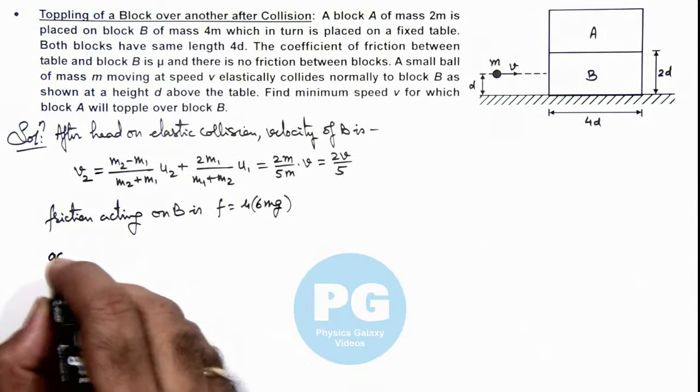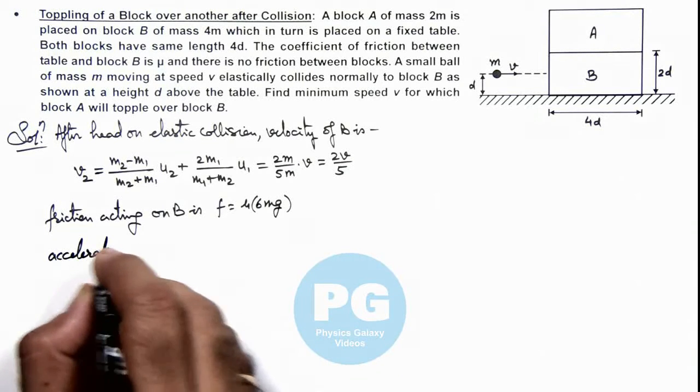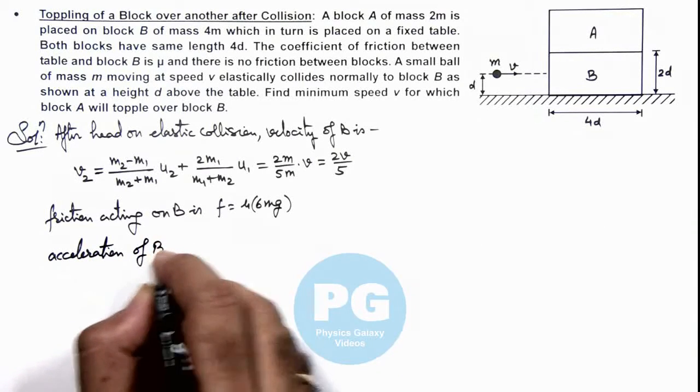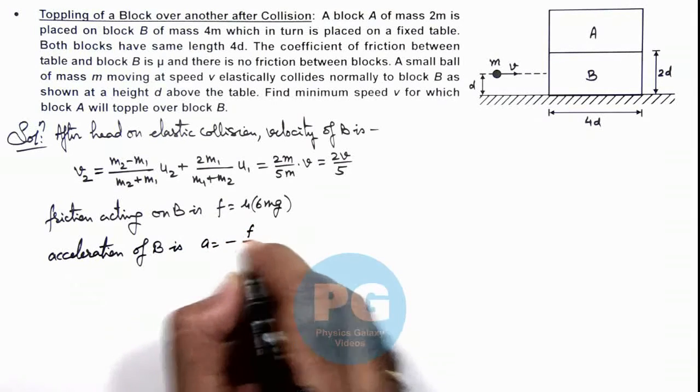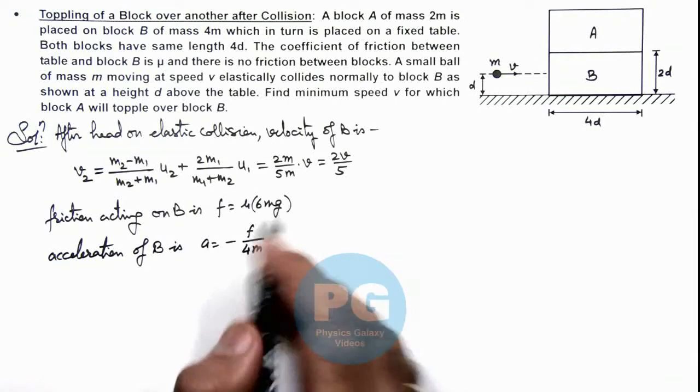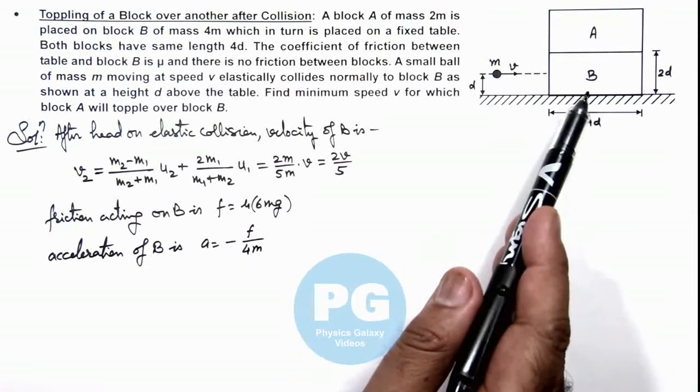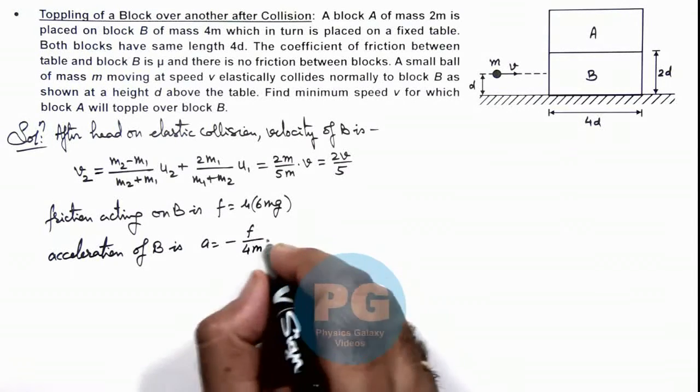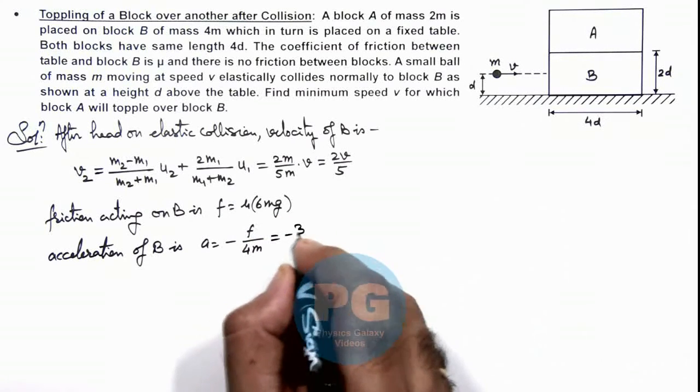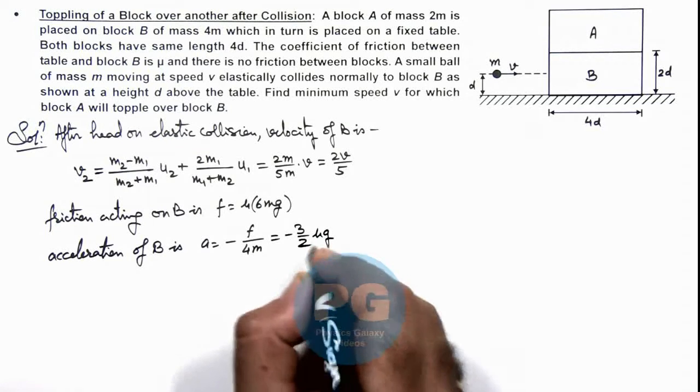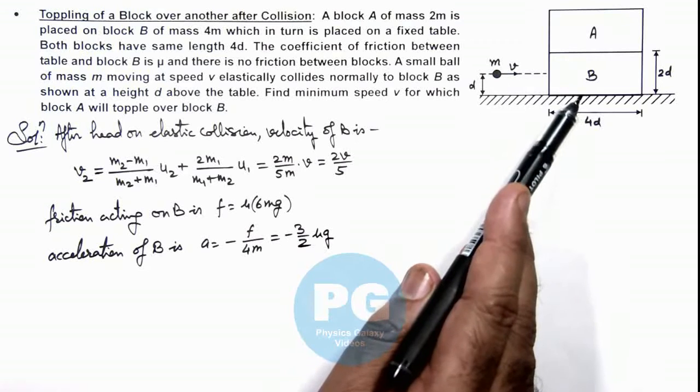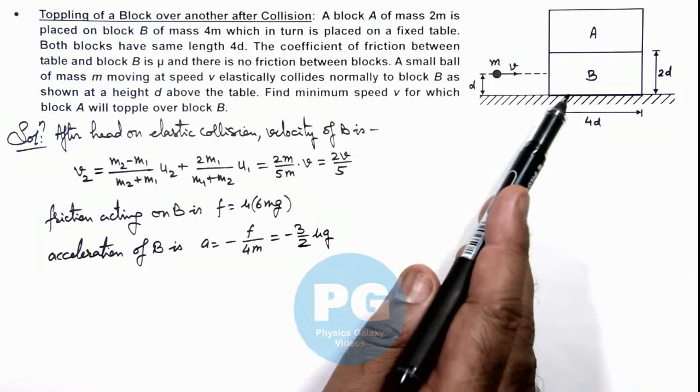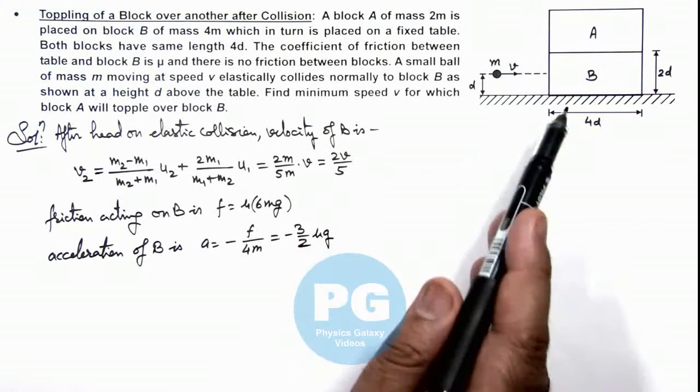Due to which we can calculate the acceleration of B is this acceleration we can write as minus friction by 4m as friction is the only force acting on block B and its mass is 4m. So on substituting the value of friction this gives us minus 3 by 2 μg. This is the acceleration with which block B starts moving and its speed will slow down where initial speed was 2v by 5.